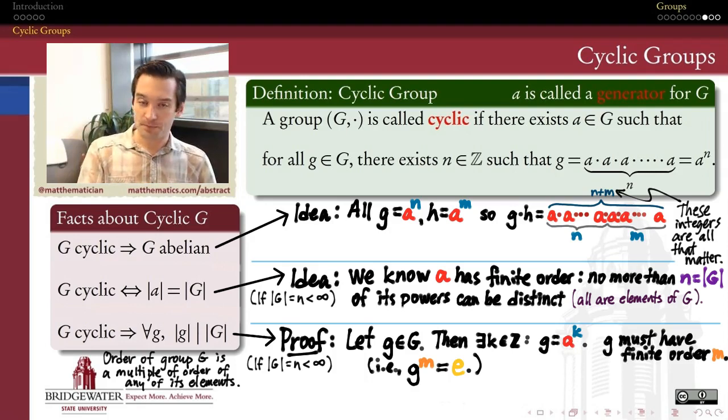Now, how do we know that the order of G has to be finite? We can make the same argument that we made earlier. The order of G has to be finite, because otherwise, all of its powers being distinct would imply that this group were infinite. So G has to have finite order.